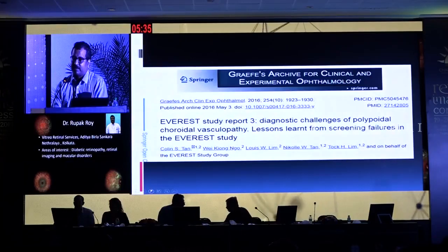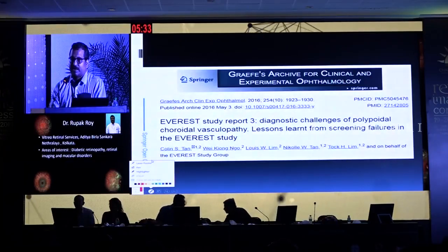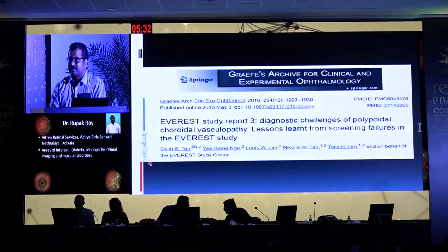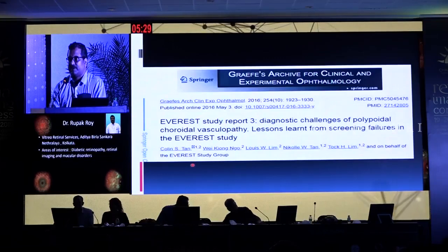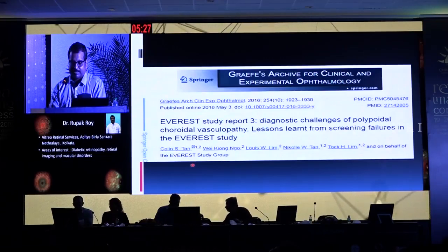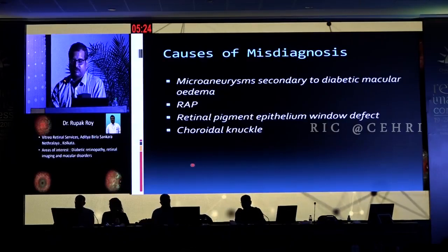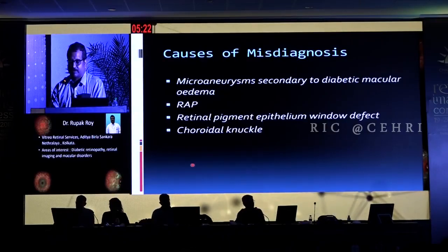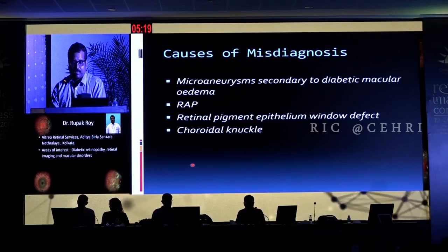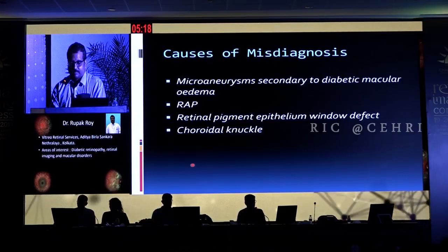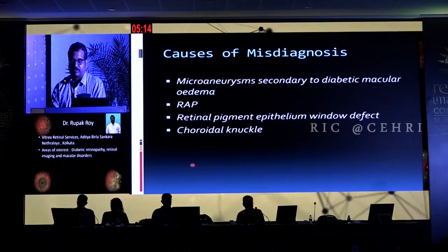The Everest study report 3 tried to look at the causes of misdiagnosis or diagnosis failures in their cohort of trial patients. What they found was the main causes of misdiagnosis were microaneurysm secondary to diabetic macular edema, RAP lesion, retinal pigment epithelium window defect — and herein we are first introduced to the term choroidal knuckle.